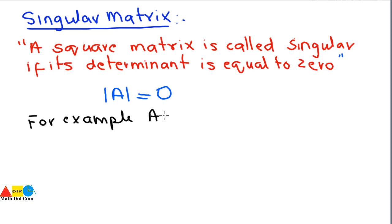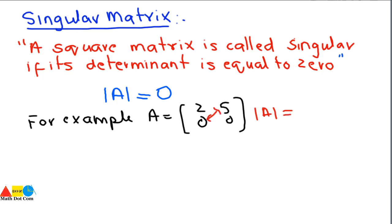For example, let A = [[2, 0], [5, 0]]. Finding its determinant: 2×0 minus 5×0 = 0 minus 0 = 0. Since the determinant equals 0, this is a singular matrix. So if a square matrix has a determinant equal to 0, it is called a singular matrix.